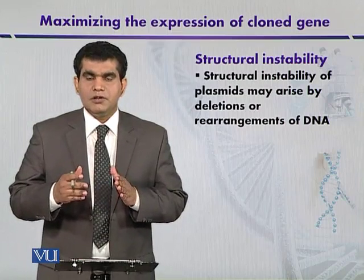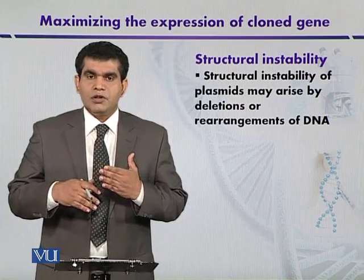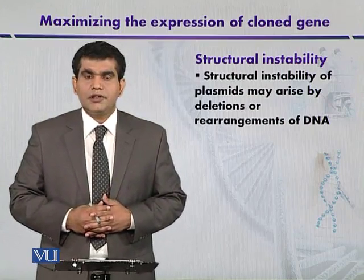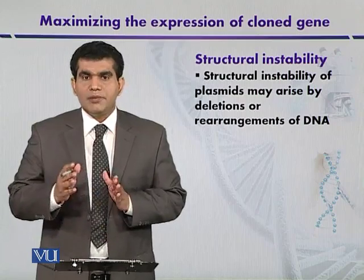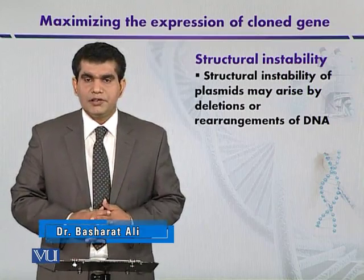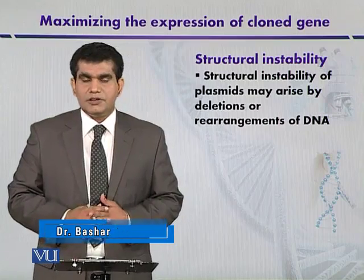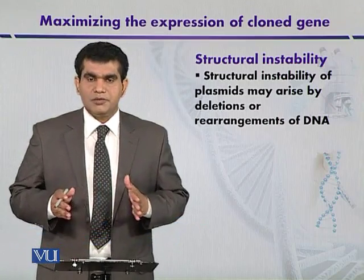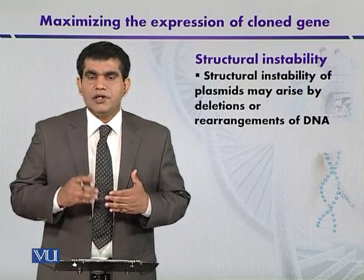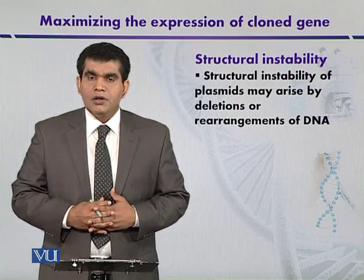Chimeric plasmids are those plasmids composed of more than one copy of plasmids joined together, and they are called chimeric plasmids. These chimeric plasmids were able to replicate in two host organisms, like E. coli and Bacillus subtilis, and were the first source where structural instability in plasmids was noticed.